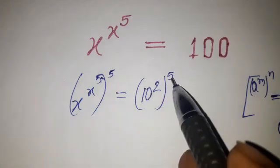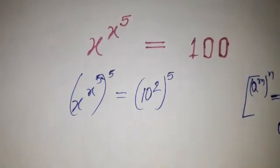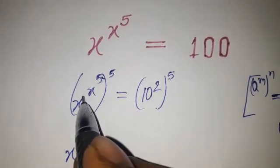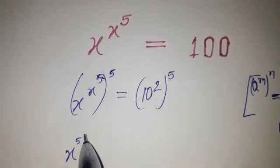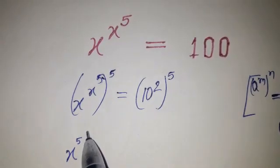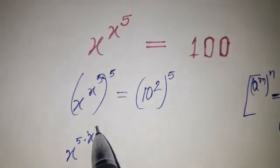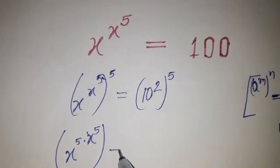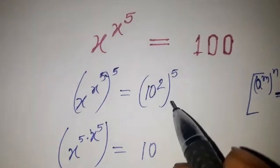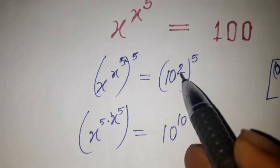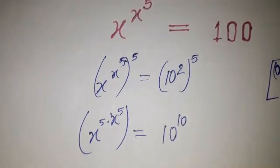And here 5 into 2, 10, so base is 10 and power is 10. The same thing I am just going to do here. X, this 5 will come here, so here 5. Okay, so I am writing in this way, and here 10 into 5 - that is, no, 2 into 5, that is 10.